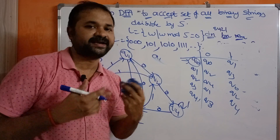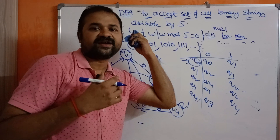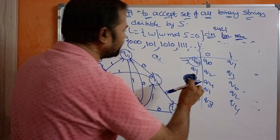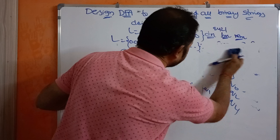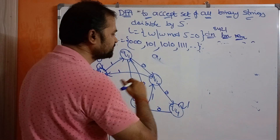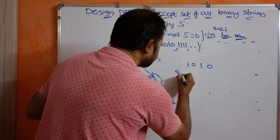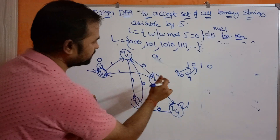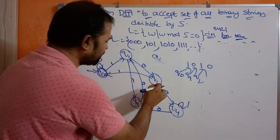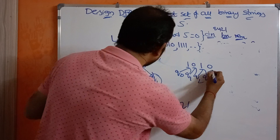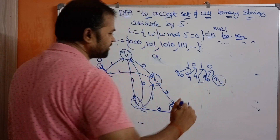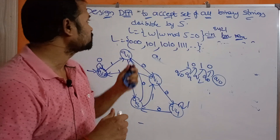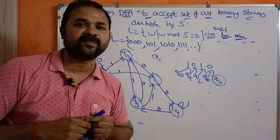Let us verify by testing the string 1010, which equals 10 in decimal — we know 10 is divisible by 5. Starting at q0: q0 on 1 → q1, q1 on 0 → q2, q2 on 1 → q0, q0 on 0 → q0. We end at q0, the final state, so the string is accepted. This confirms our DFA correctly accepts all binary strings divisible by 5.